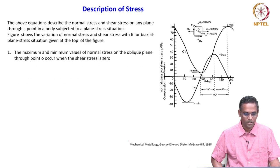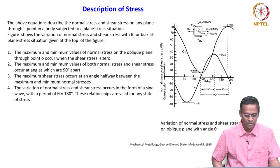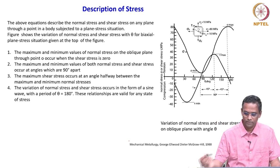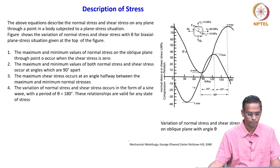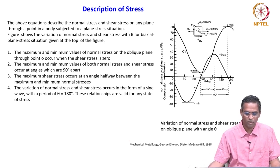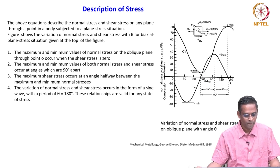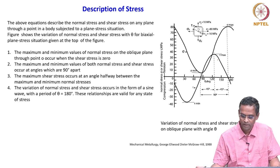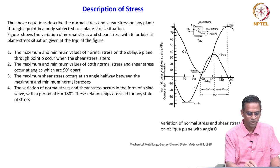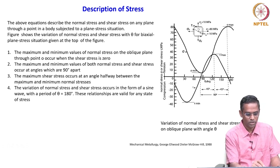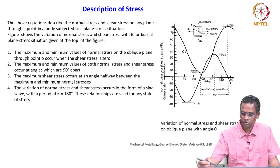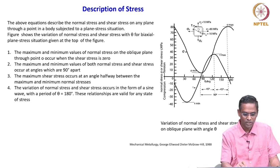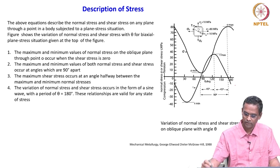We discussed that the maximum and minimum values of normal stress on an oblique plane through point O occur when the shear stress is zero. The maximum and minimum values of both normal stress and shear stress occur at angles which are 90 degrees apart. The maximum shear stress occurs at an angle halfway between maximum and minimum normal stress — there was a typo error yesterday corrected here. Finally, the variation of normal stress and shear stress occurs in the form of a sine wave.